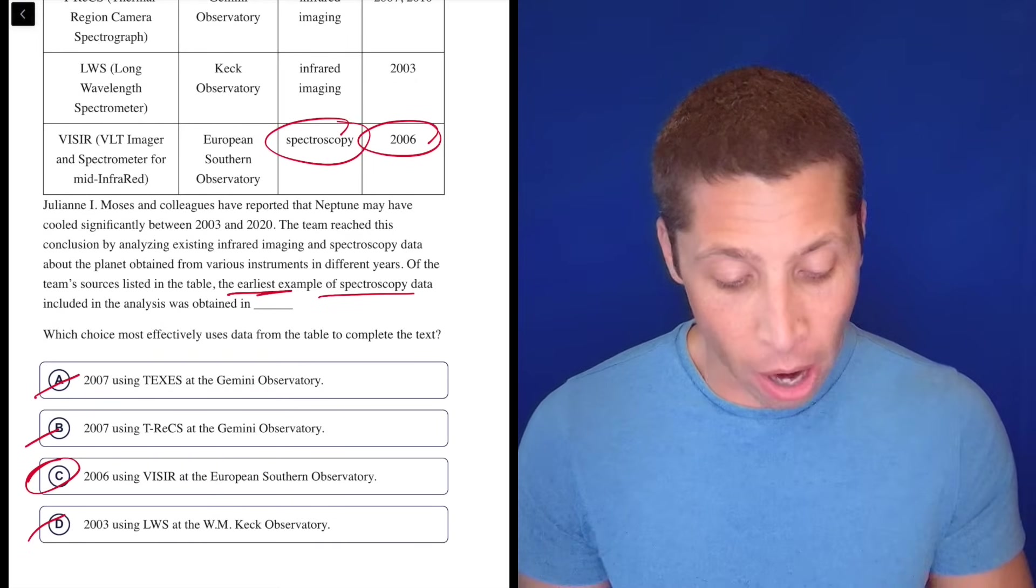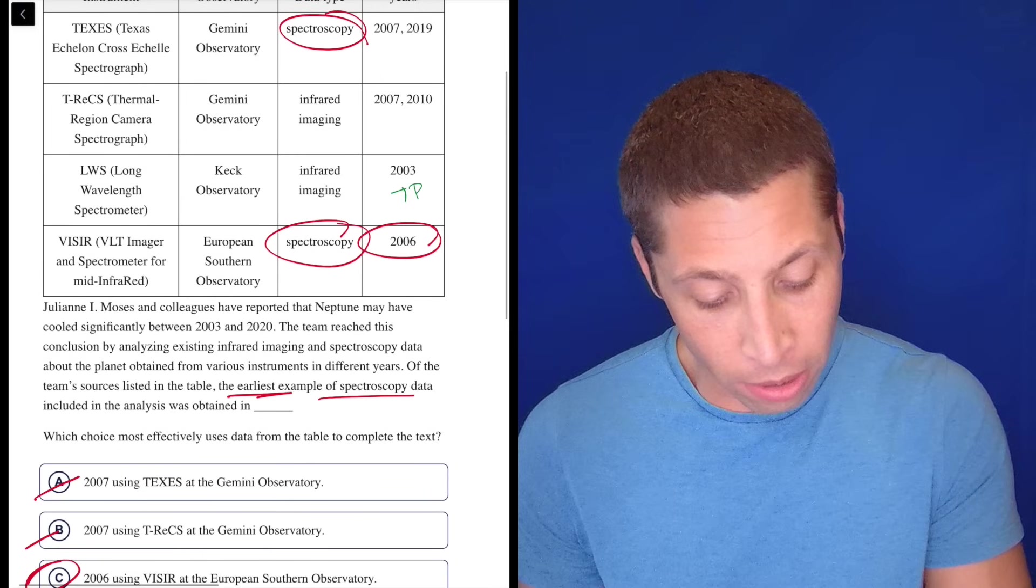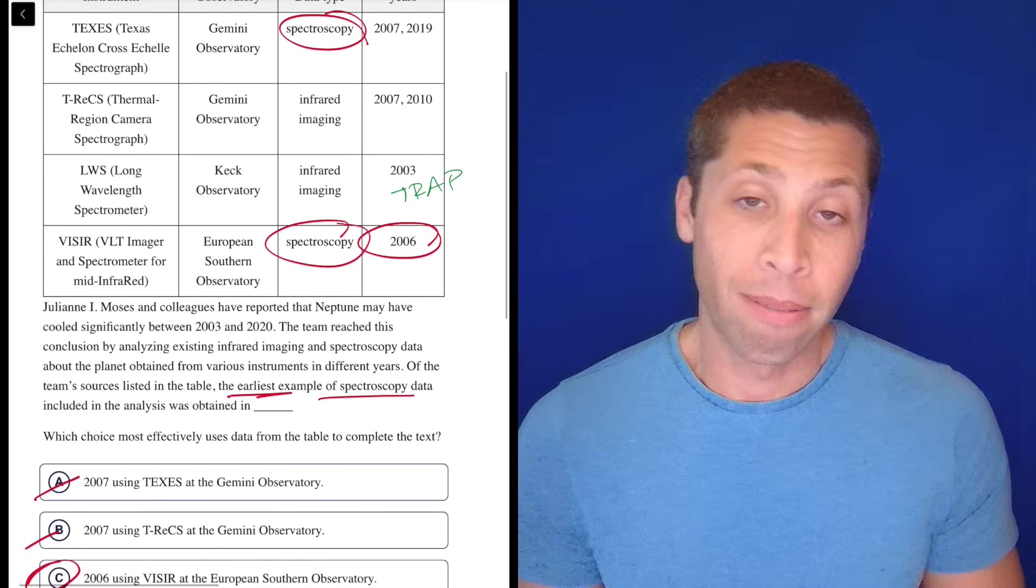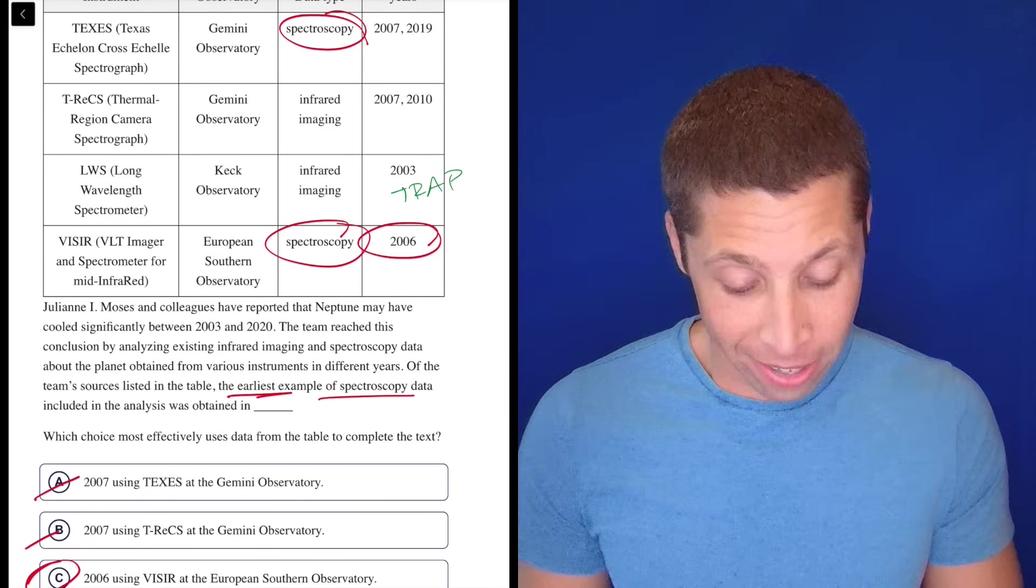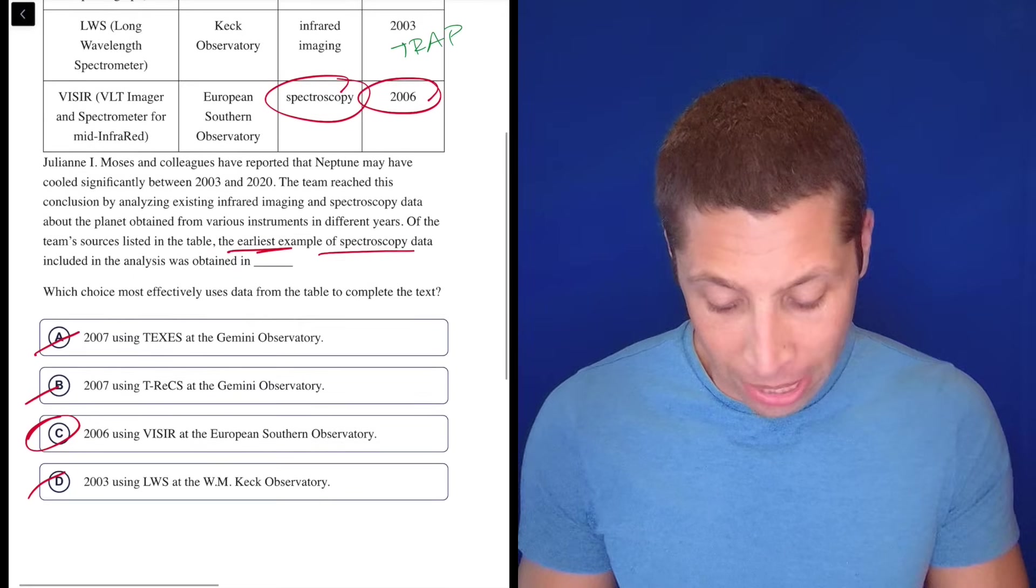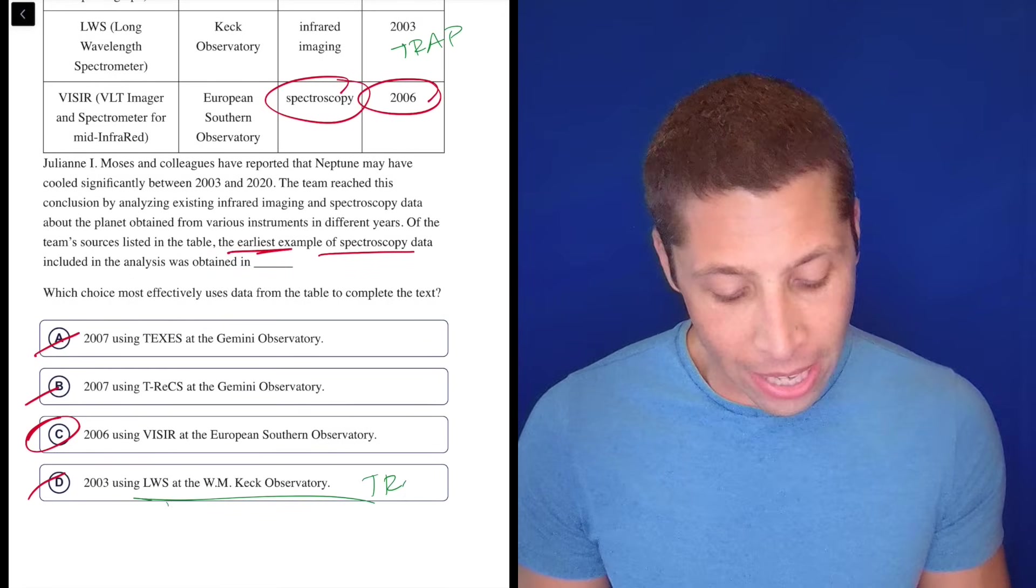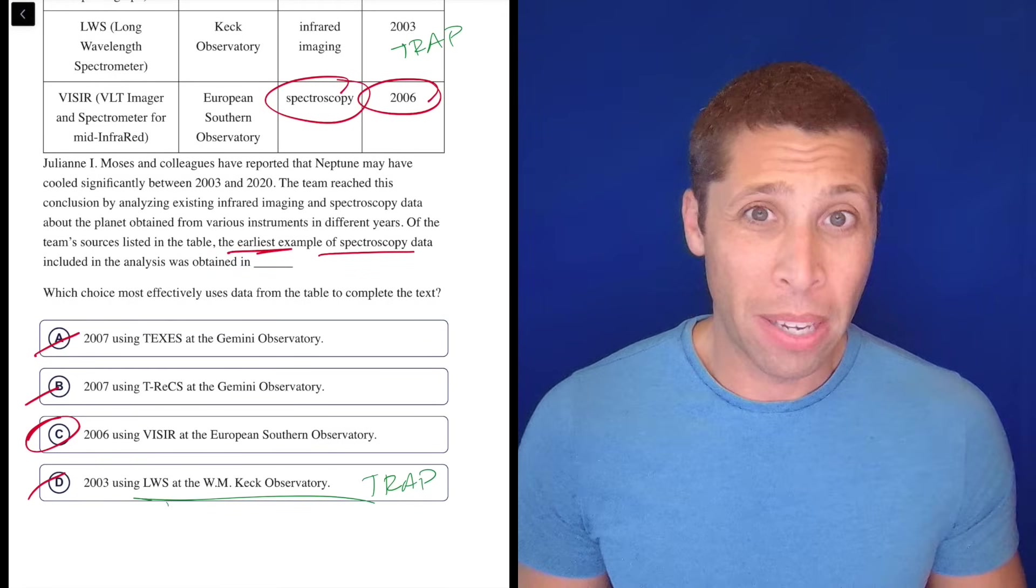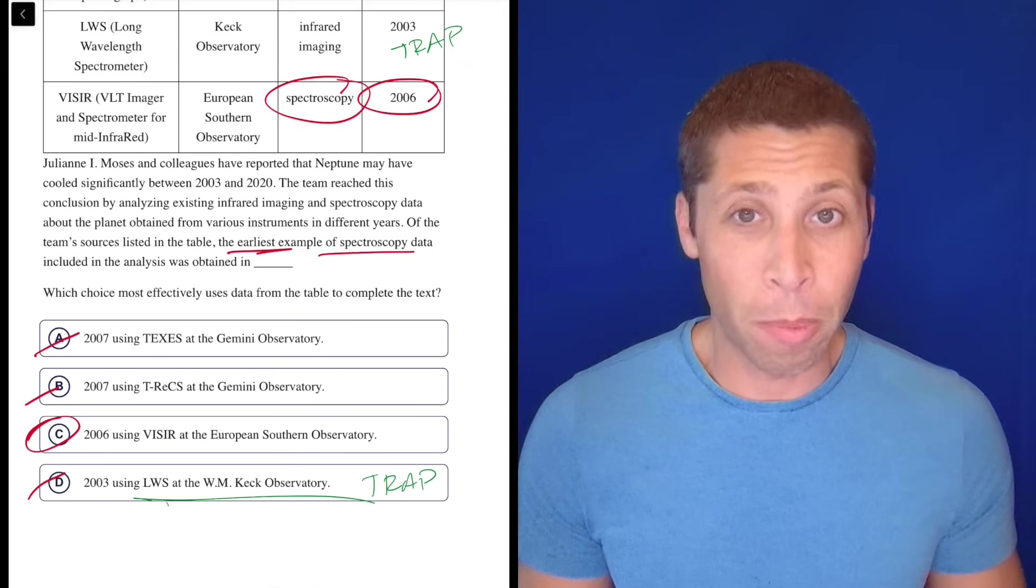Because a lot of people, I think, are just going to go, oh, 2003, right? That's the earliest year. So that's the infrared, that's the LWS, right? So there you go. I think choice D is the trap answer. Because a lot of people are just going to read the word earliest and just be like, oh, there you go.